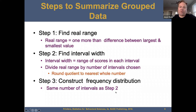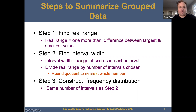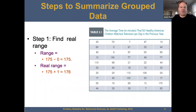Today it's just about concepts. The real range is one more than the difference between the largest and smallest value. You want to find the interval width — the interval width is the range of scores in each interval. So define the real range: 175 minus 0 equals 175. The real range is 175 plus 1, equal to 176.